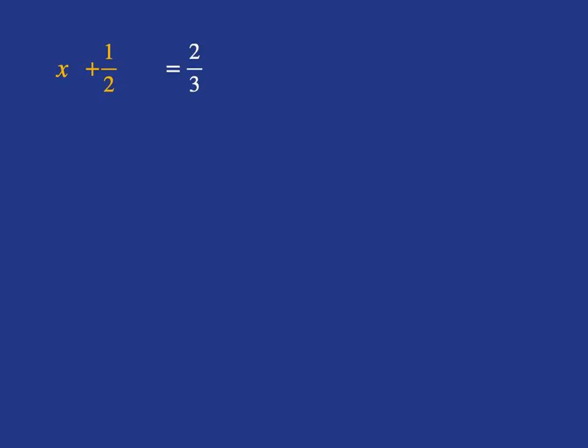And we can even get fractions in the equation, so we could be asked to solve something like x plus a half is equal to 2 thirds. Same process as we've dealt with with whole numbers. We've got to get x by itself, so we need to subtract a half. What we do to one side, we must do to the other.